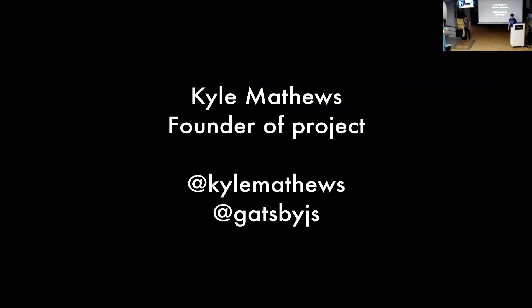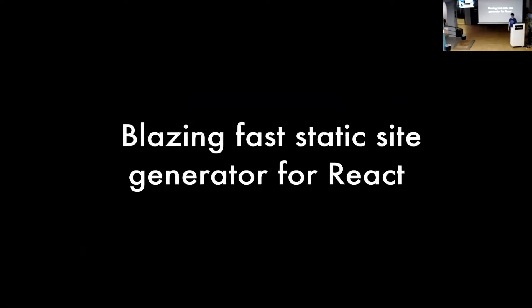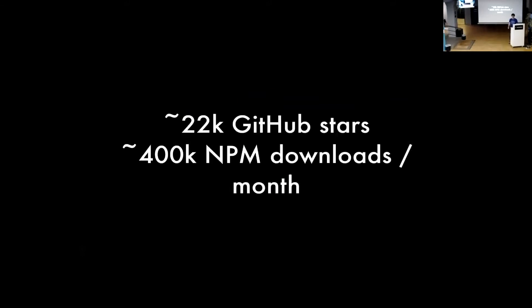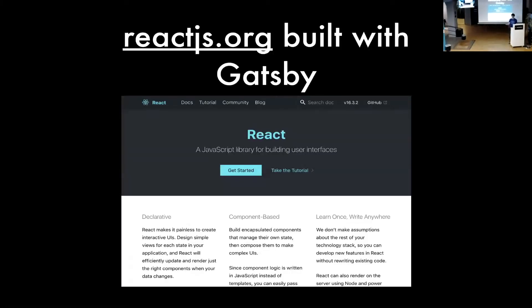I'm Kyle, and I'm going to talk about Gatsby — a blazing-fast static site generator for React. It's gotten pretty popular: it has 22,000 GitHub stars and roughly 400,000 downloads per month. Notable sites use it like graphql.js.org, which you've probably been to.